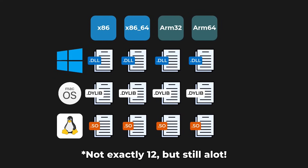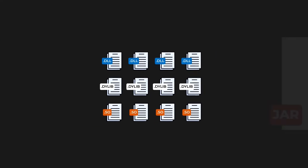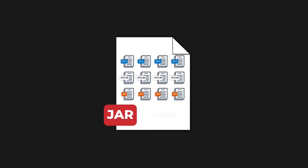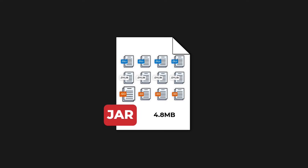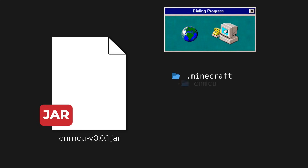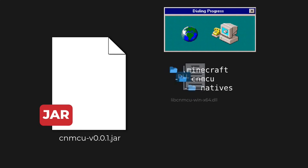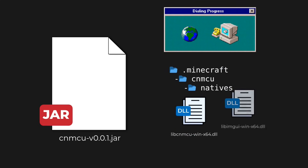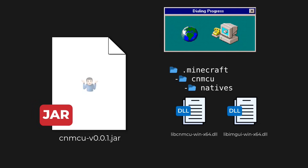If I include all of those in a single JAR file, that's going to result in a large file size, and in the end a mod user would just use one of them — so it's a waste to include all of them. Maybe the first time a user installs this mod, it could download the appropriate native files from the internet into the Minecraft directory and load from there. But who knows.